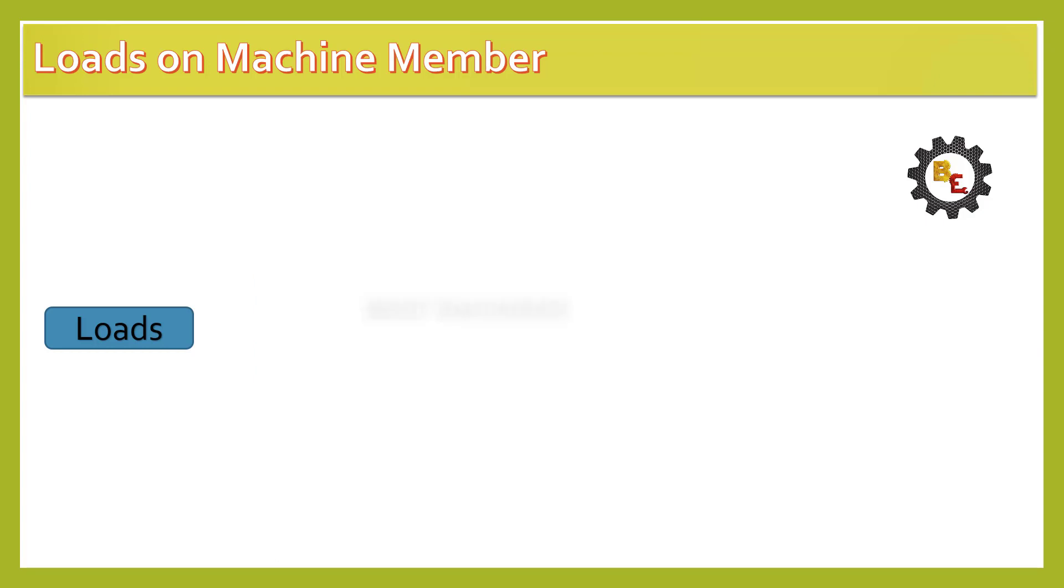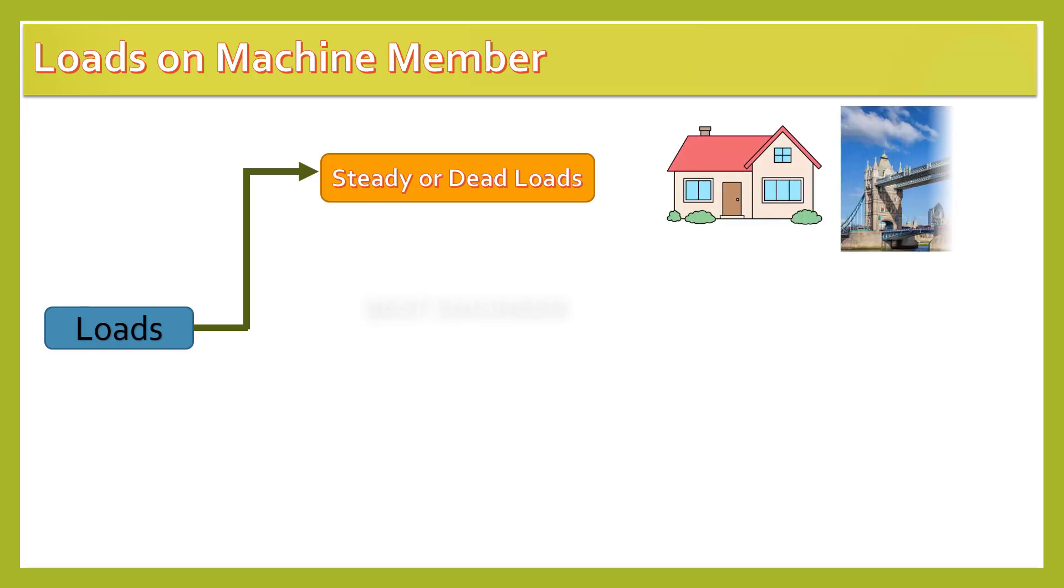The loads acting on machine components are four types. The first type of load is steady load or dead load. The load does not change its direction and magnitude is called steady load or dead load.